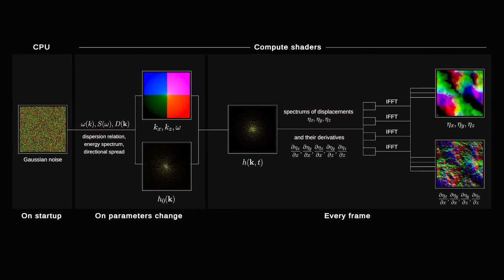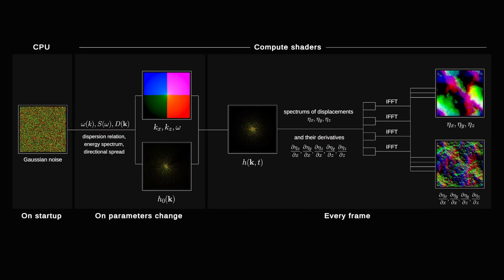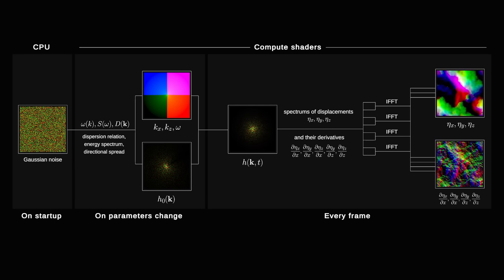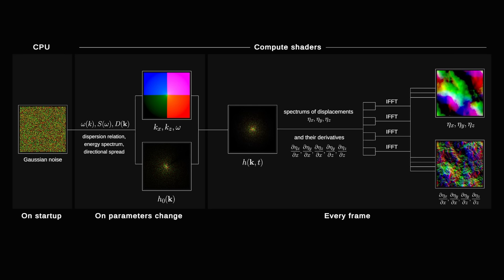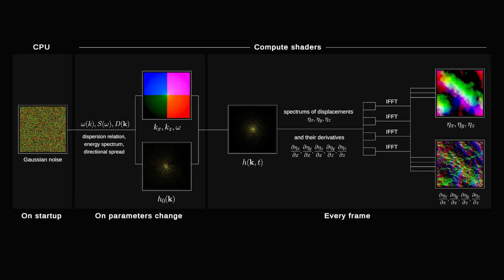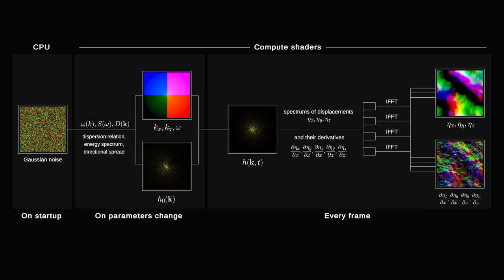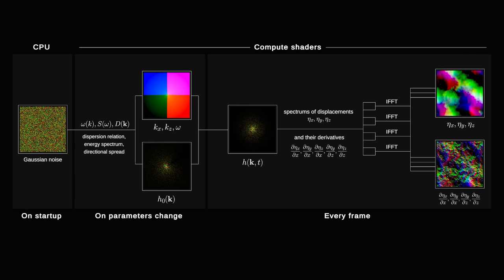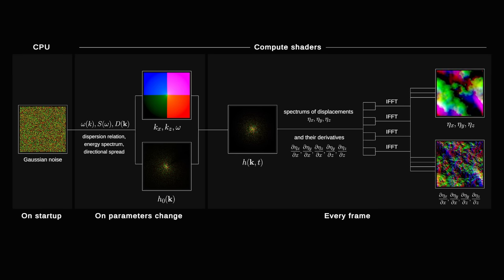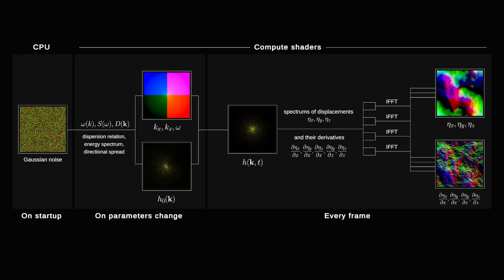Let's step through the calculations from start to finish. At startup we generate on the CPU a texture of the same size as our grid, with pairs of Gaussian random numbers in red and green channels. After that all of the math is done on the GPU with compute shaders. Every time we change parameters of the ocean we have to calculate wave vectors themselves, their corresponding frequencies and the stationary spectrum. We pack them into two render textures.